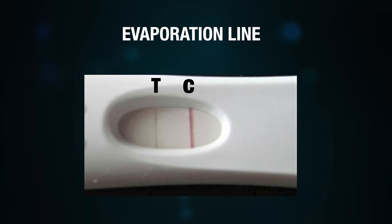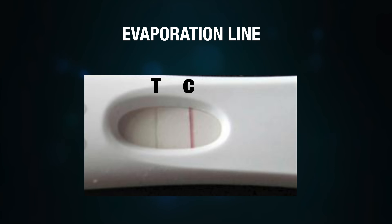Evaporation line: if the results are read after a long time — the given reaction time is three to five minutes — and if read later than ten minutes, you get a line called an evaporation line, caused when the urine evaporates and leaves a faint colorless line, also called a watermark line. So read the result within the reaction time. You have seen all these scenarios, but you need one hundred percent confirmation of whether the woman is pregnant or not.